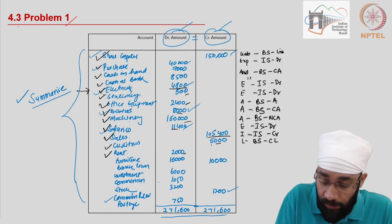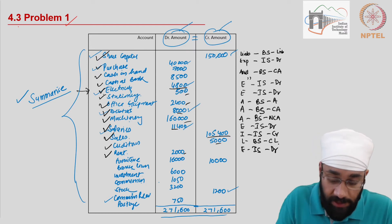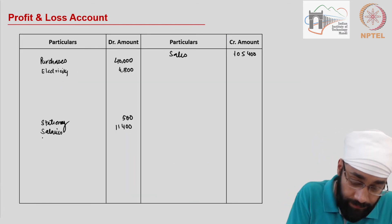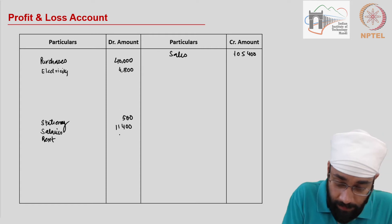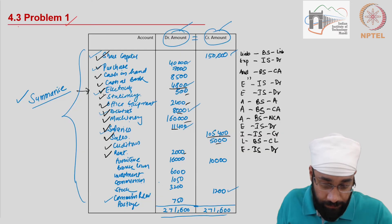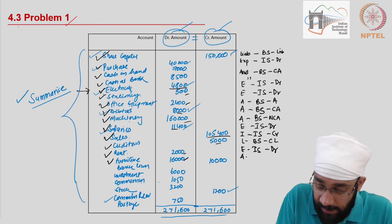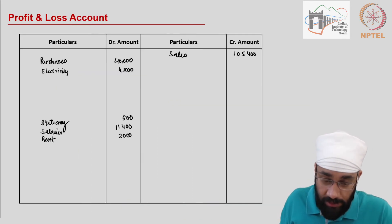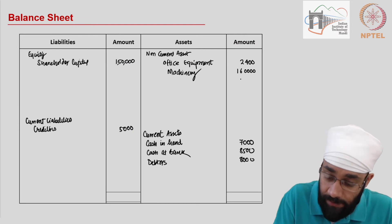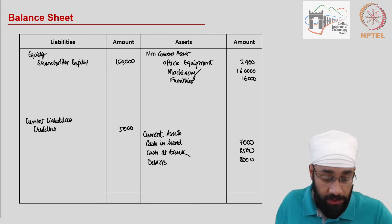Then you have rent 2,000. This is an expense in the income statement on the debit side — rent 2,000. Next up is furniture 16,000. This is an asset in the balance sheet under the non-current assets — 16,000. I'll write furniture under non-current assets.